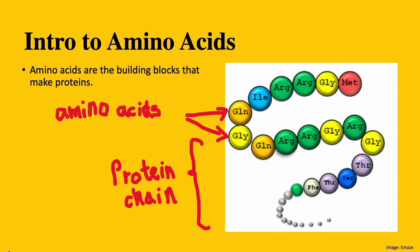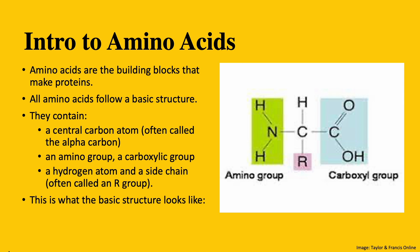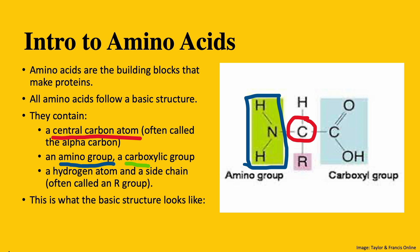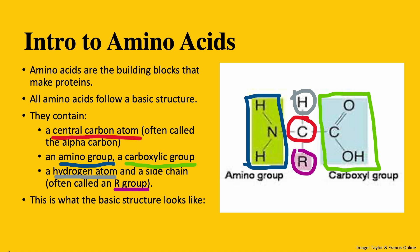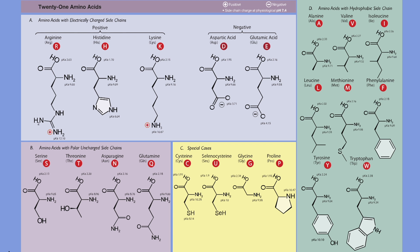A brief intro to amino acids. These are the building blocks of proteins. All amino acids follow the same basic structure. They contain a central carbon atom, often called the alpha carbon, an amino group, a carboxylic group, a hydrogen atom, and a side chain. The side chain is often called the R group. There are many types of amino acids, some of which do not follow the basic structure.